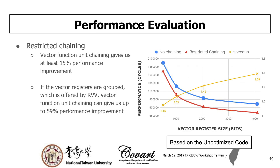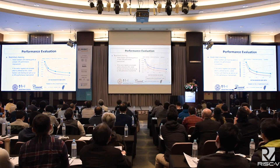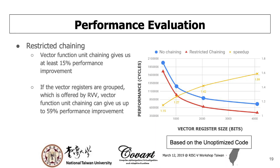Here is our performance evaluation. Based on the optimized code, using restricted chaining, vector function unit chaining gives us at least 50% performance improvement. We can see the impact of chaining becomes greater when the vector register size is longer. Interestingly, we do not need to change the implementation to get this benefit under the RISC-V vector extension, because it offers a register grouping feature. We can use this feature to boost our vector register size from 512 bits to 4096 bits and naturally get up to 59% performance improvement.